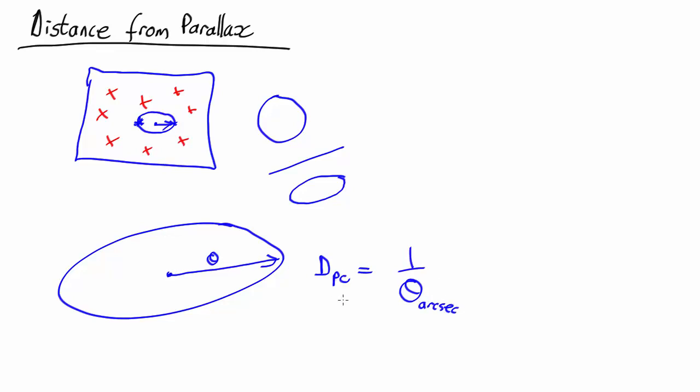So if the angle is 1 arcsecond, the distance is 1 parsec. If it's half an arcsecond, it's 2 parsecs and so on. That's all there is to it.